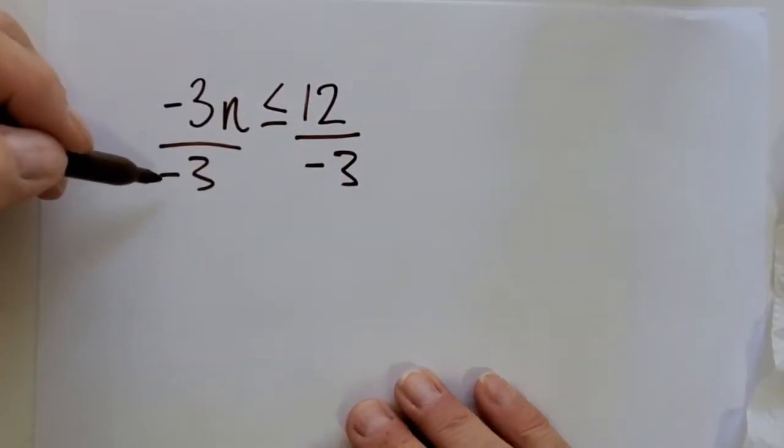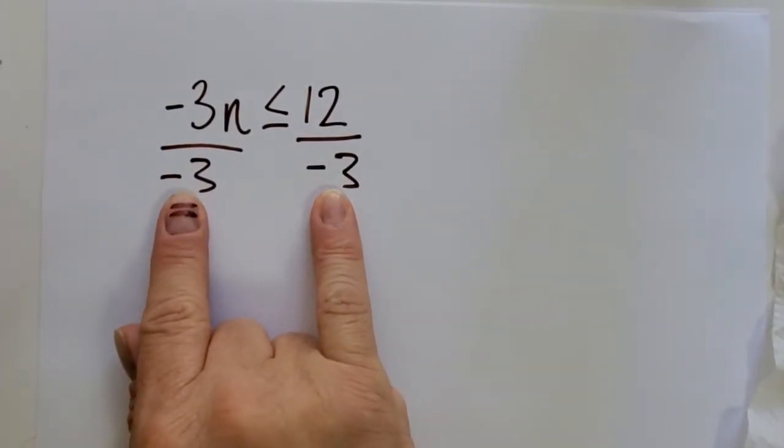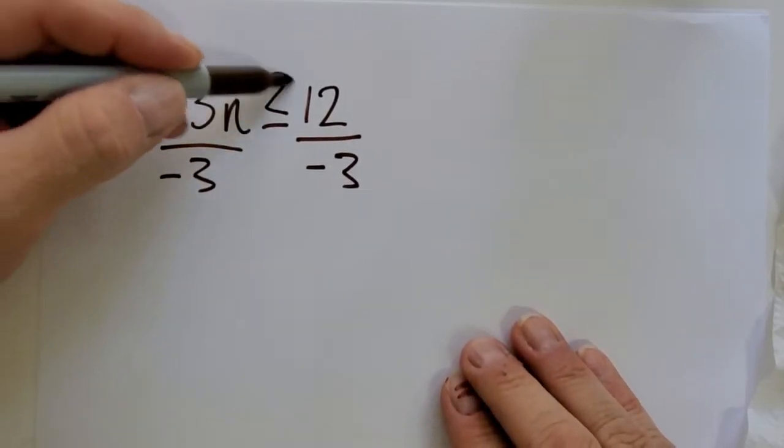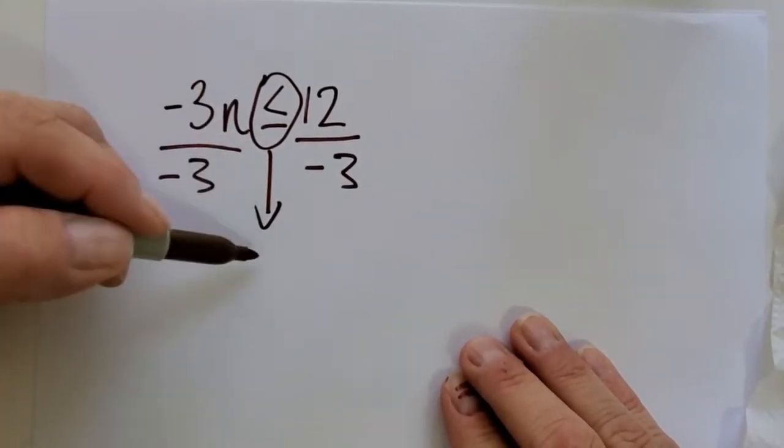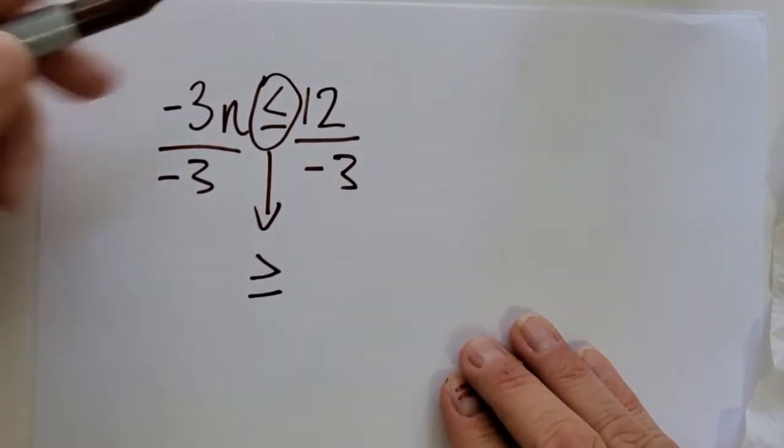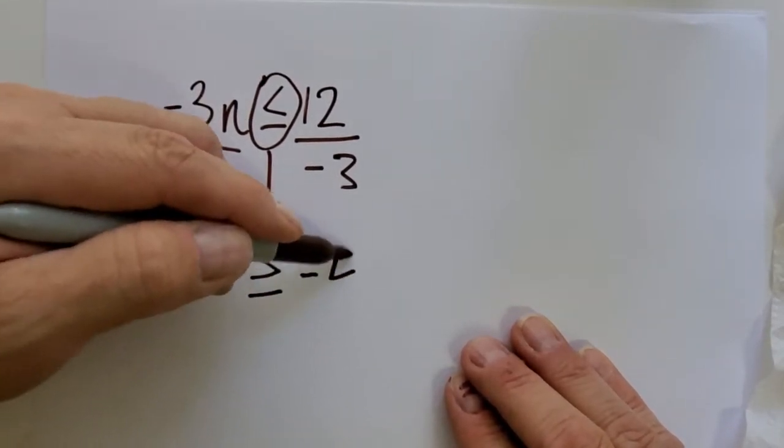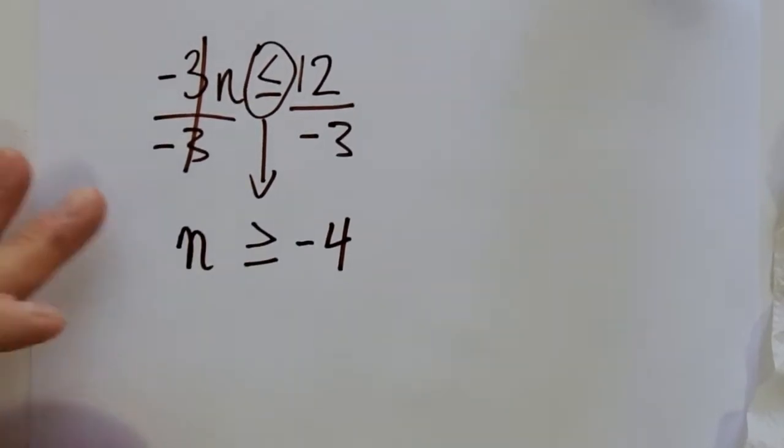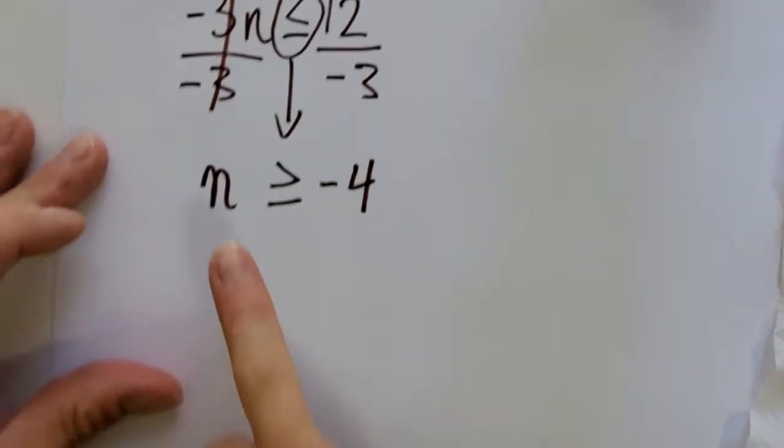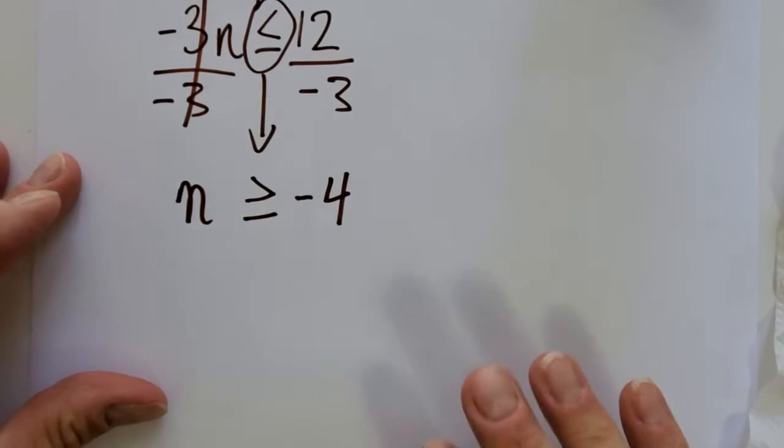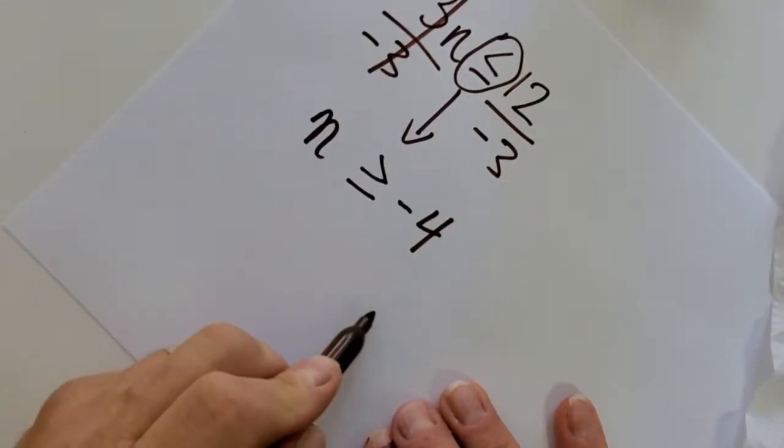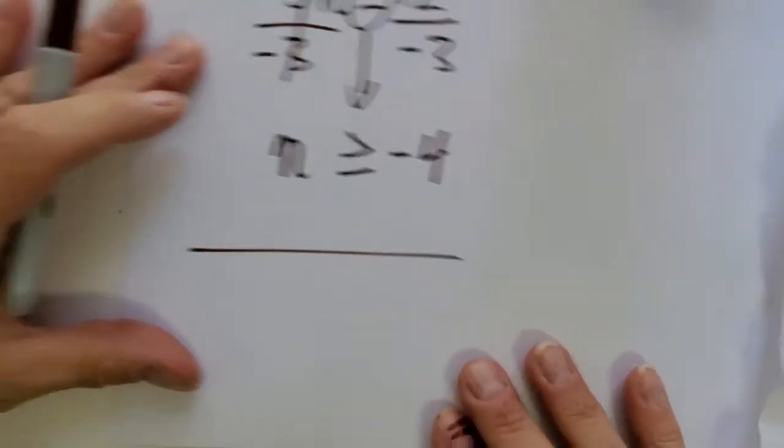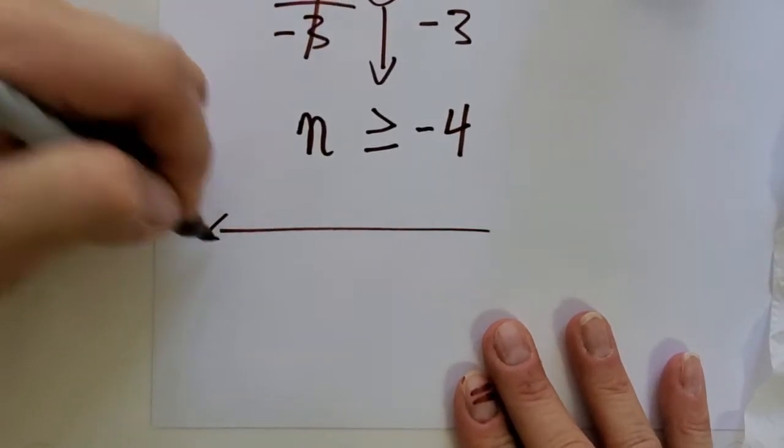And guess what happens? Did we divide by negative? Yes, we did. So this, make it go the other way. And nobody's going to remind you. You're just going to have to remember. What is our solution? Our solution is all values greater than or equal to negative 4.